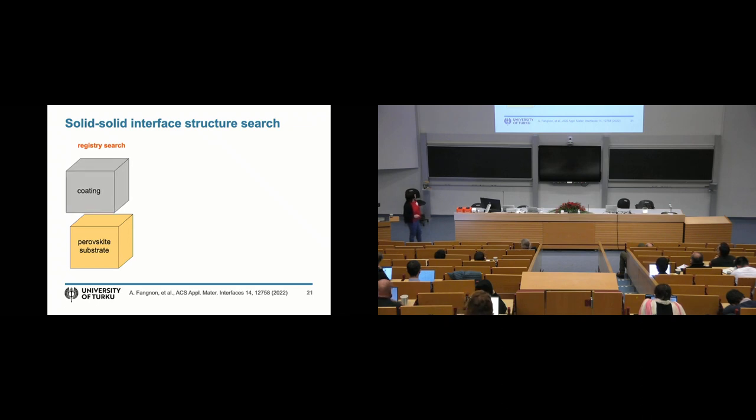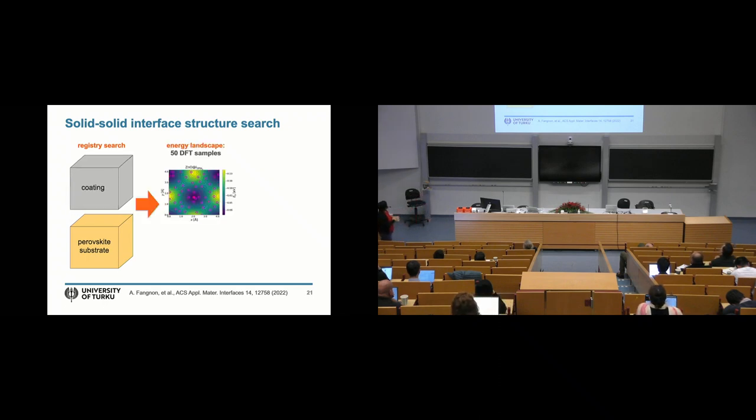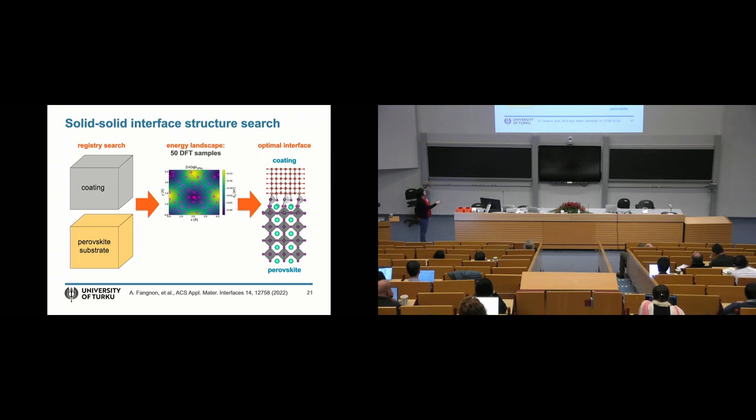One simple approach that is working very well is just the registry search between two inorganic components where you look at the coating and some substrate. In this case, we were looking for coatings for perovskite solar cells. You get a very simple 2D landscape with very few data points. You find where the minimum of energy is. You place the coating in that location. And then you relax fully the interface here. And after we get the structure, we computed the energy levels on this side and this side. And tried to find out how the charge injection across these two layers works. So this is really accelerating the structure search, even though it's not very sophisticated. So we can study those functional properties we're interested in. And by the way, for different coatings and different substrates, you get really different kinds of energy landscapes. So this is not necessarily such a simple problem.